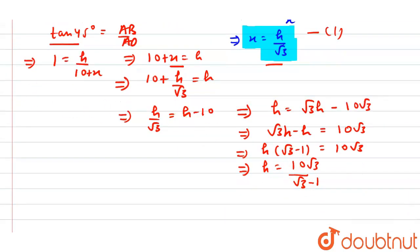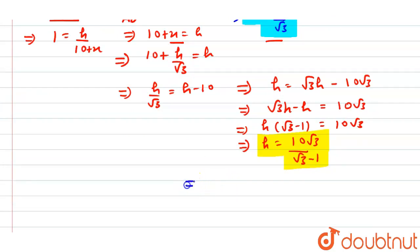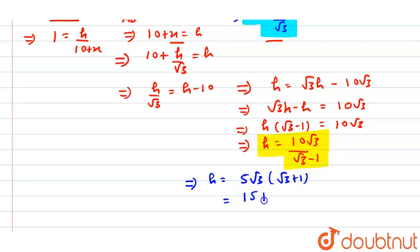So h equals 10√3 divided by (√3 minus 1). After rationalizing, we get h equals 5√3 multiplied by (√3 plus 1), which equals 15 plus 5√3 meters. This is our final answer.